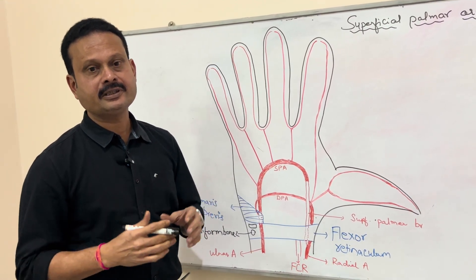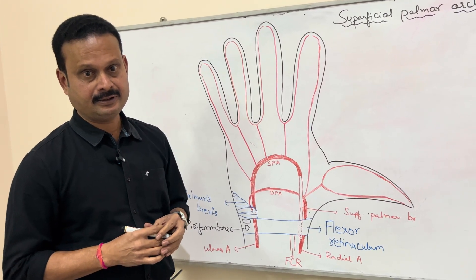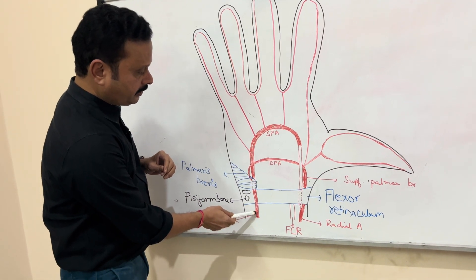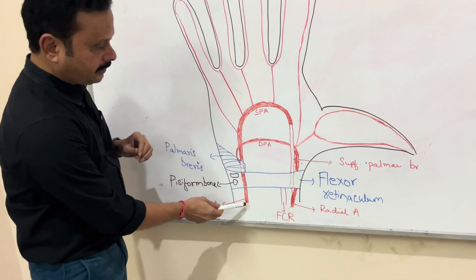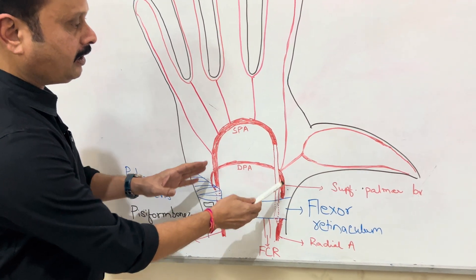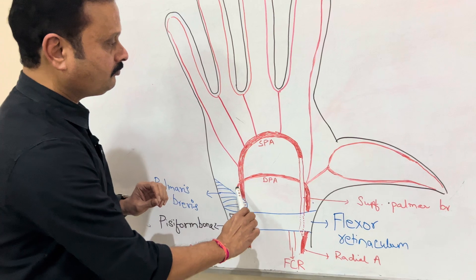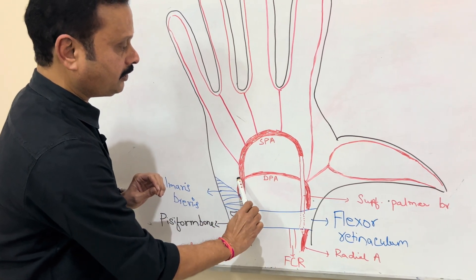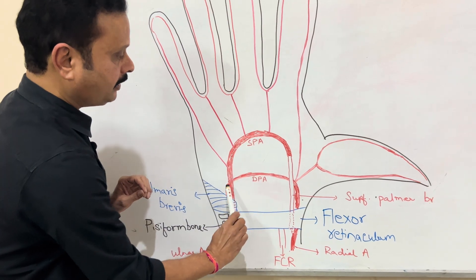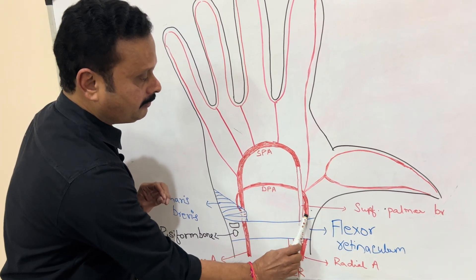Let us now study about the palmar arches. The distal end of the ulnar artery and the distal end of the radial artery, after dividing into its branches, forms two arches: one along the superficial plane, that is the superficial palmar arch, and the other one is the deep palmar arch.